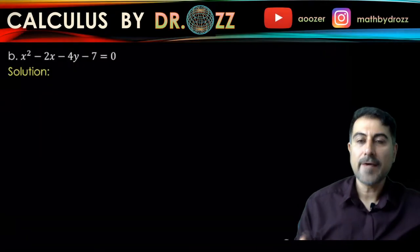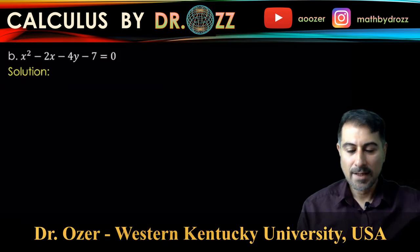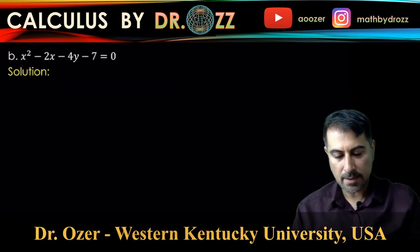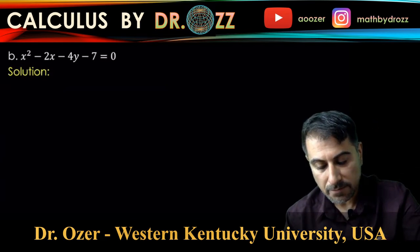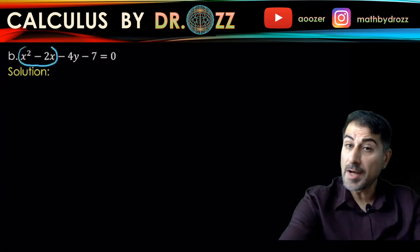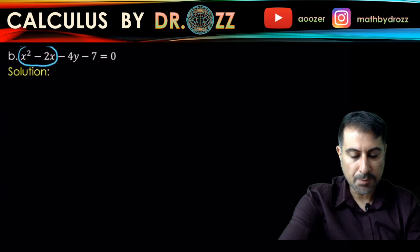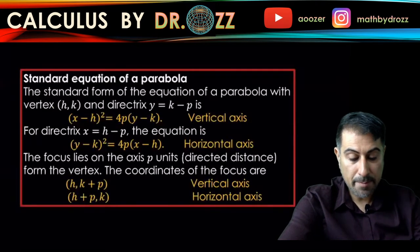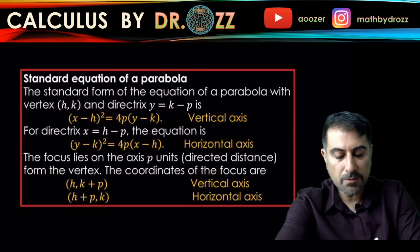Alright, for part B we have x squared minus 2x minus 4y minus 7 equals 0. The terms that I want to complete the square are the first two. This time we have x raised to the power of 2 and not y, so we go back to the standard equation of a parabola table and see what we're going to grab out of this.